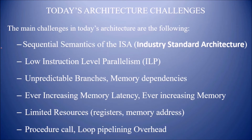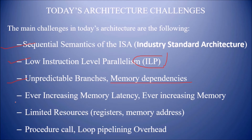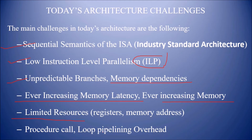Today's architecture challenges include: sequential semantics of ISA (Industry Standard Architecture), low instruction-level parallelism (ILP), unpredictable branches, memory dependencies, and ever-increasing memory latency. There are also limited resources — registers and memory addresses are fewer — and procedure calls and loop pipelining overheads. These are challenges common to most high-performance processors.